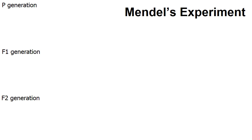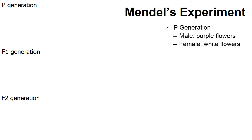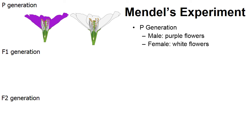Let's look at how Mendel conducted his experiment. We mentioned seven characteristics, but we're going to just look at one — flower color, the purple flowers versus the white flowers. In the first generation of the experiment, also known as the P generation (P stands for parents), he had one parent with purple flowers and one parent with white flowers. He tried it both ways: in some experiments the male had purple flowers and the female had white, and in others it was vice versa.